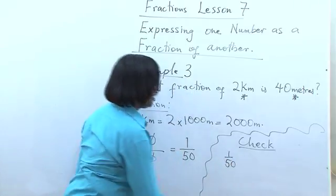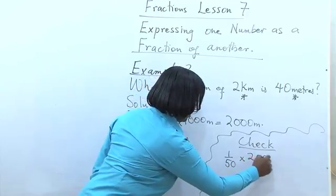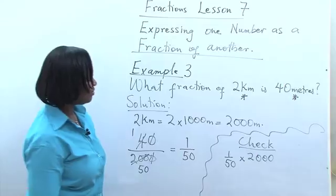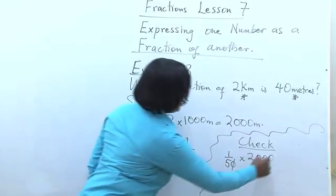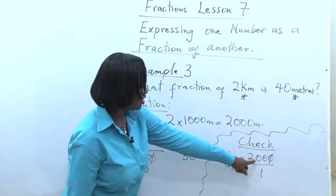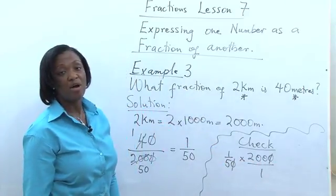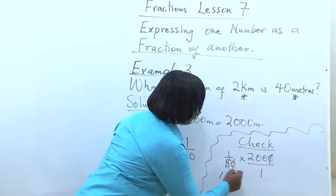1 over 50 of 2,000, will that give us 40? 5 in 20 is 4, and then there's a 0. So 5 in 5 is 1.